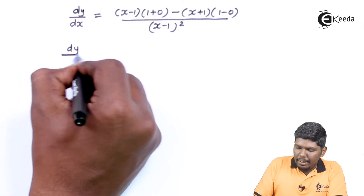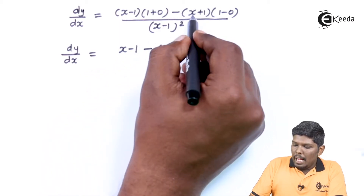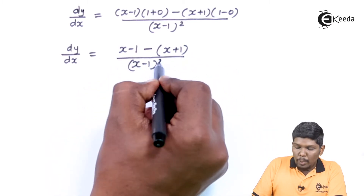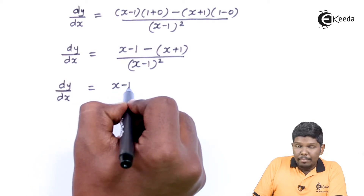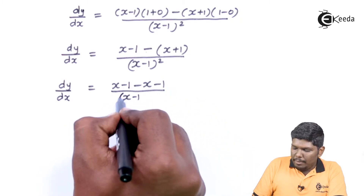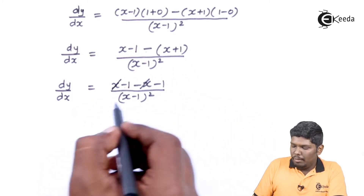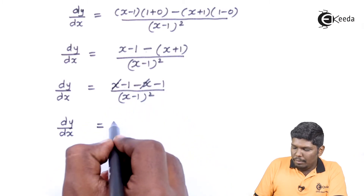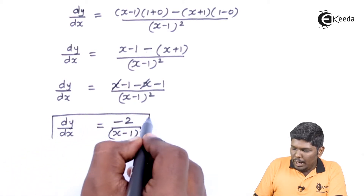Simplifying further: dy/dx equals (x - 1) minus (x + 1), all upon (x - 1) squared. This gives x - 1 - x - 1. The x and -x cancel, and -1 - 1 gives -2. So dy/dx equals -2 upon (x - 1) squared. This is the derivative of the given function.